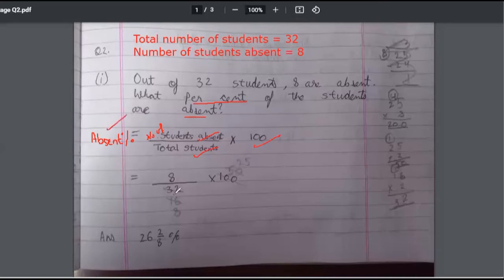Now how many students were absent? 8 out of 32. Why have you not cancelled 8 and 8? So it will be 1 into 25. Answer should be 25 percent. Just be careful in your calculations. Is this thing clear?